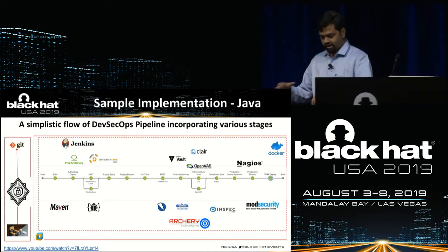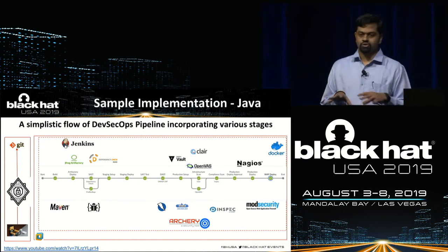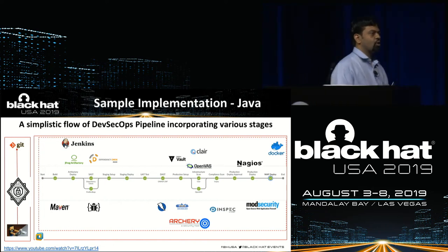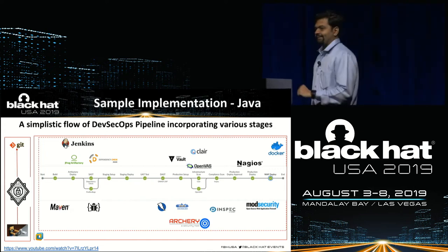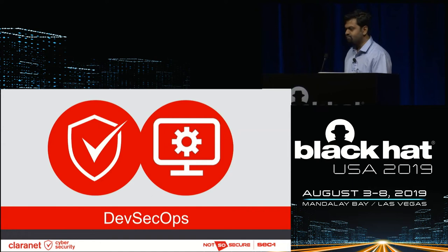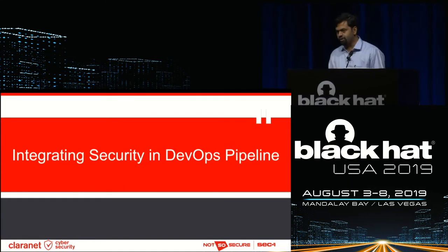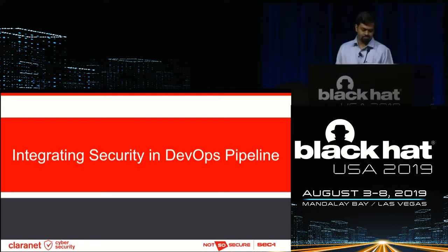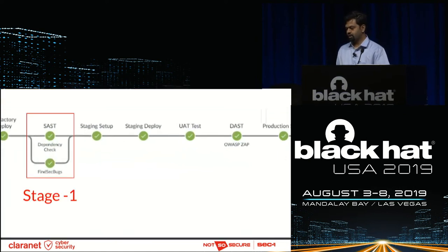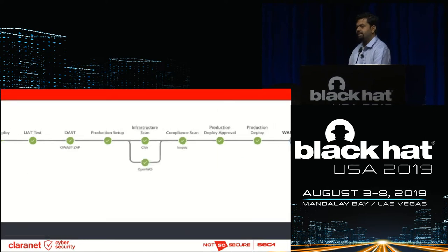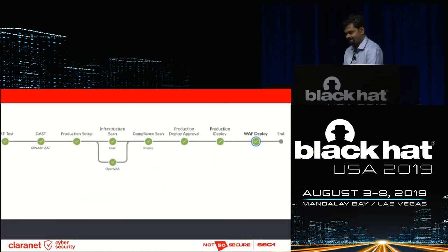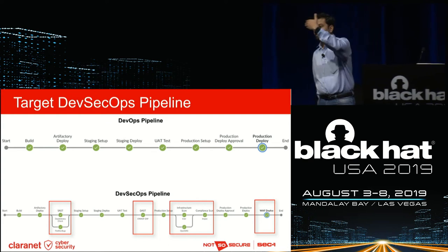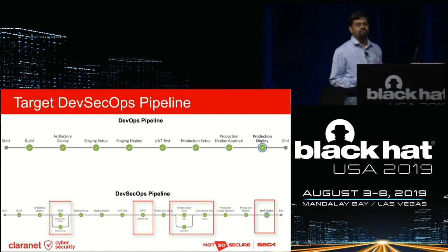Without taking a lot of time, I'll jump into a simplistic flow. We've taken Java as an application and deployed the entire DevSecOps pipeline for it. I'm going to run a quick video — instead of waiting for all the steps to finish, I've compressed everything into a video and will explain through it. You can see these are the various stages we've added in the DevOps pipeline. This was the same diagram I showed earlier: we had a DevOps pipeline and added DevSecOps protections.